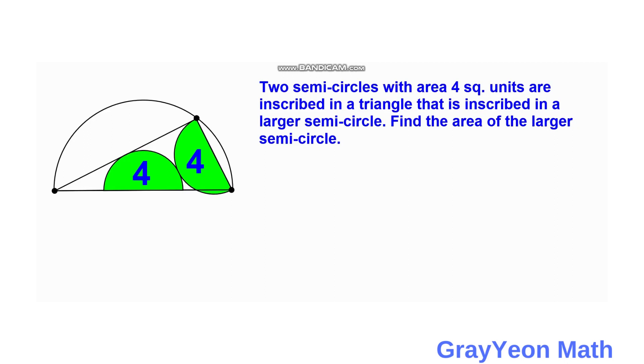Welcome to Greyon Math. We are asked to solve this problem. Two semi-circles with area 4 square units are inscribed in a triangle that is inscribed in a larger semi-circle. Find the area of the larger semi-circle.